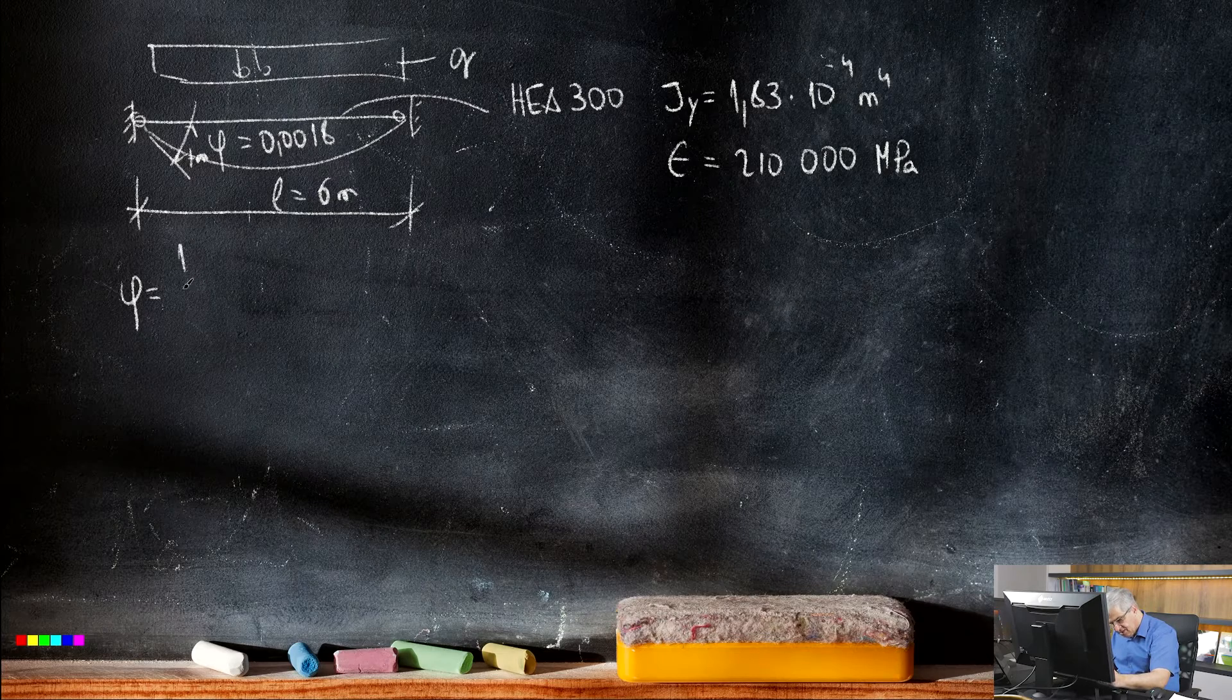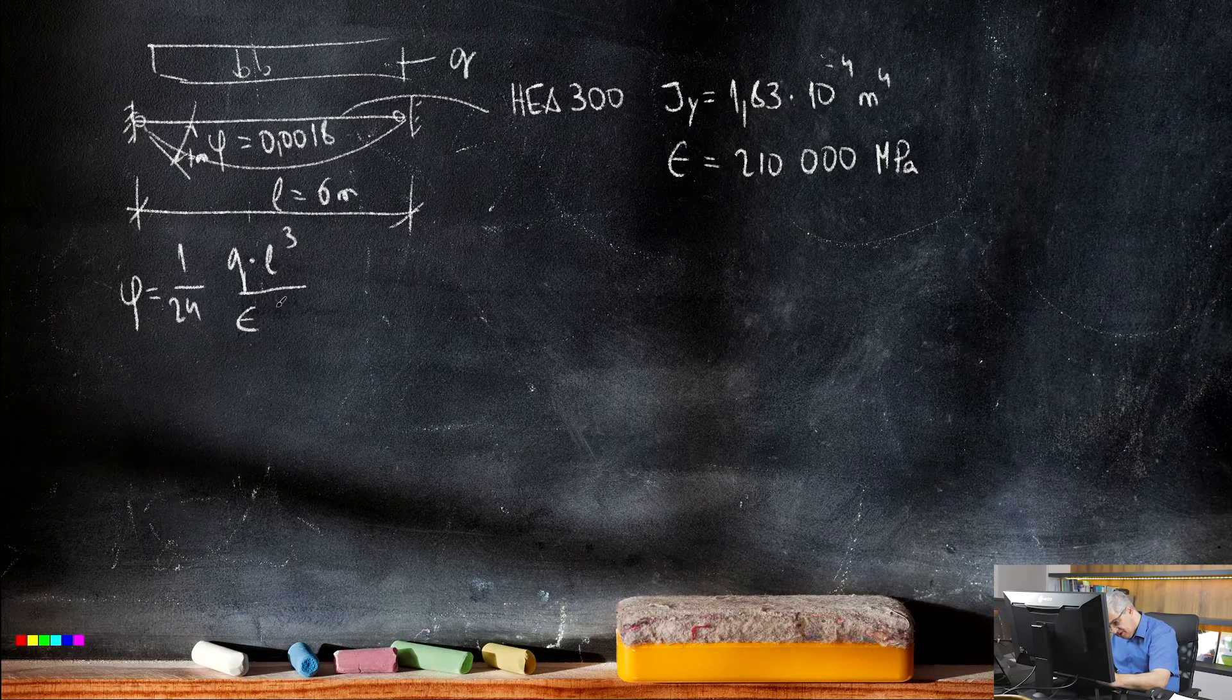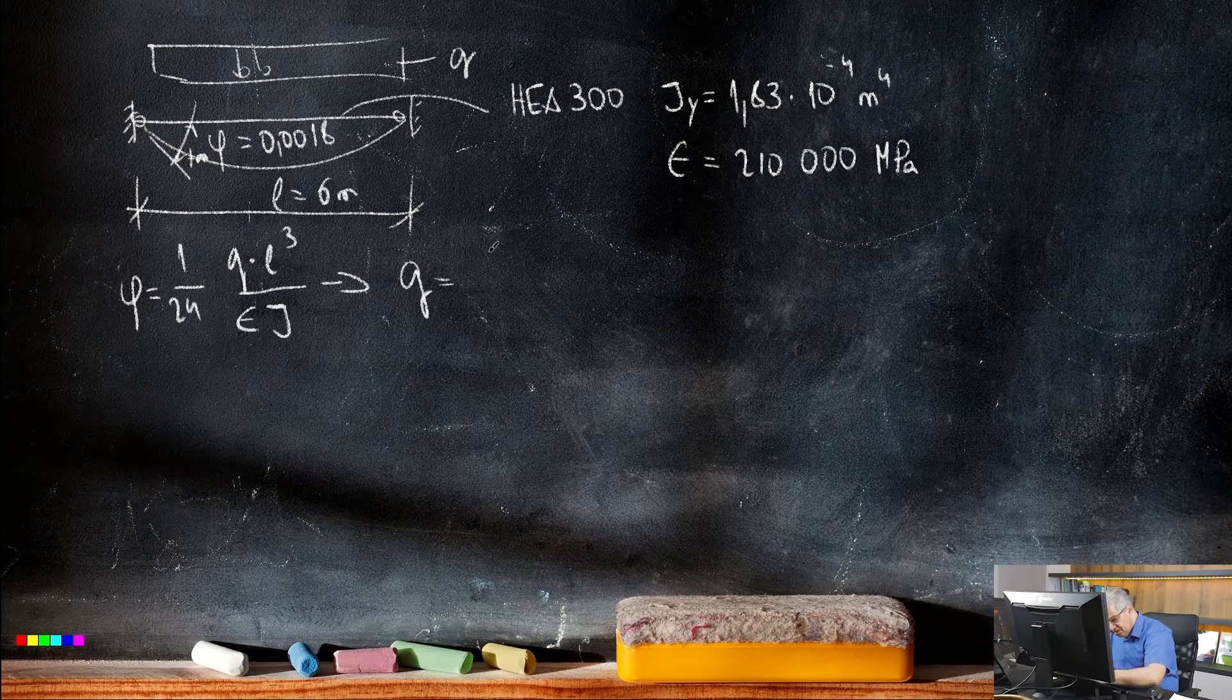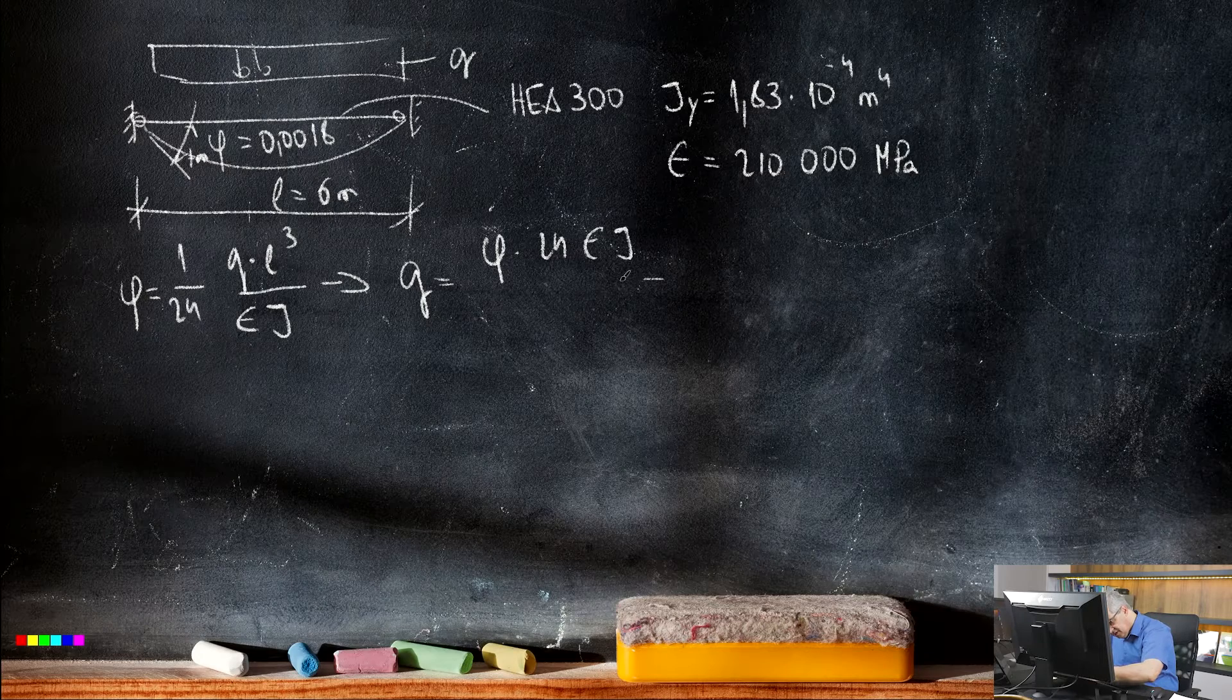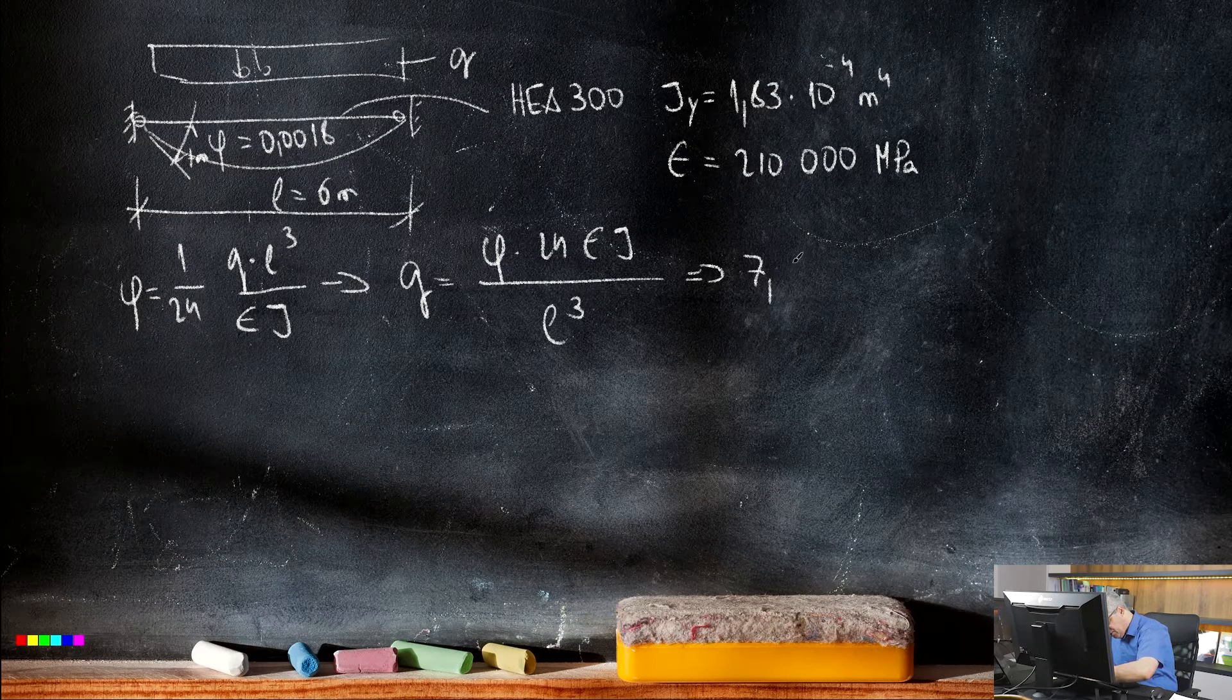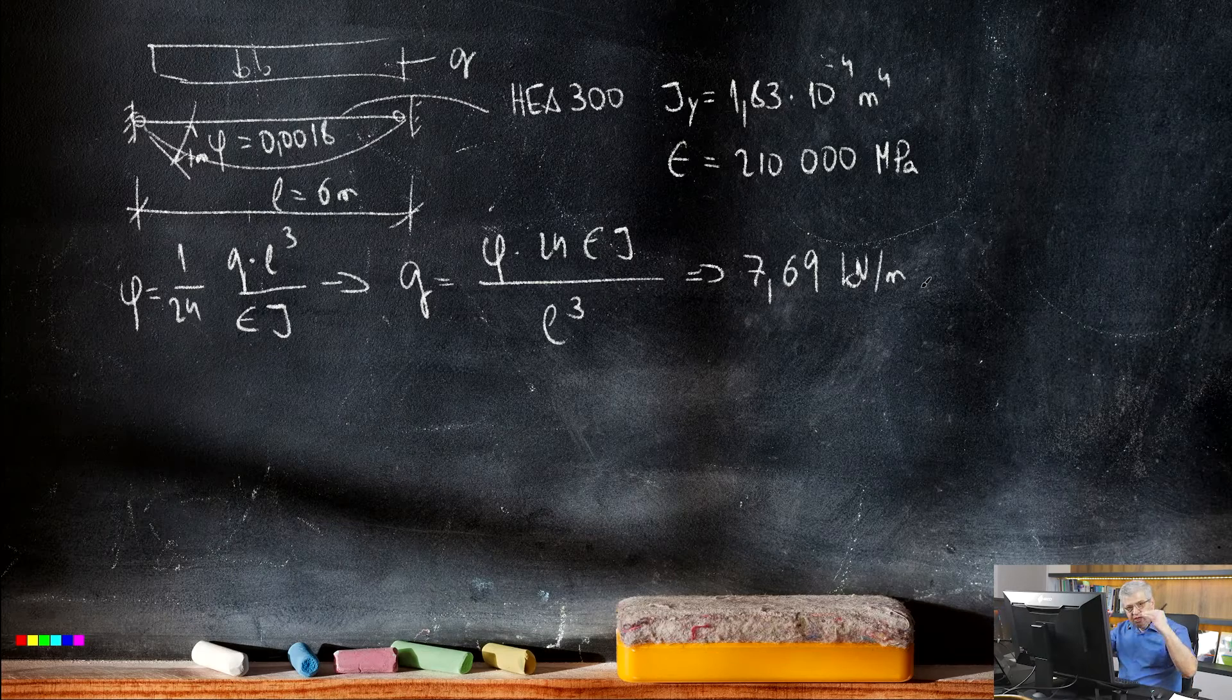If we calculate this phi, this is 1/24 times Q times L cubed divided by E I. And from this we can extract the Q. The Q is phi times 24 times E I divided by L cubed. And if we calculate it with the calculator we get 7.69 kN per meter.